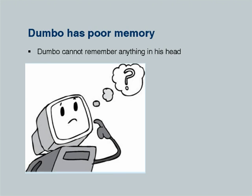We now proceed to define the computing model for Dumbo. First and foremost, we emphasize that Mr. Dumbo has very poor memory — Dumbo cannot remember anything in his head. It is important to mention this because most of our students are used to doing mental computing. They can add 5 plus 4 in their mind and come up with 9. Since they can remember, they believe that Mr. Dumbo, who looks like a human being, can also remember things in his own head. However, since we are trying to depict a computing model, we must emphasize that Dumbo cannot remember anything in his head.